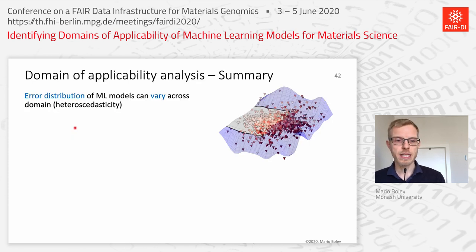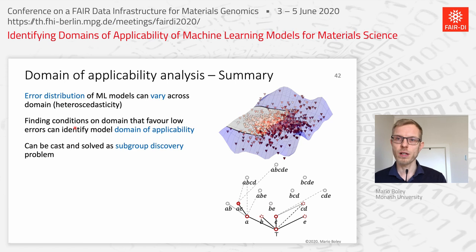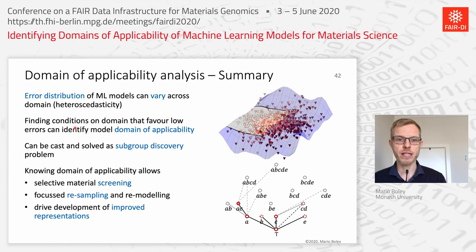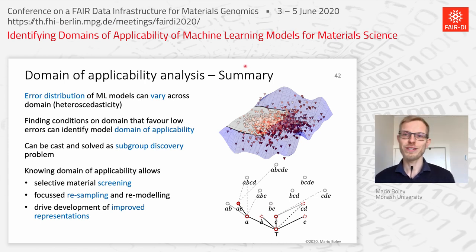In summary: the error distribution of machine learning models can vary across the modeled domain — a phenomenon called heteroscedasticity. We can identify systematic causes of error based on representations and other choices, formulating conditions on the domain that define the domain of applicability. This can be cast as a subgroup discovery problem and solved efficiently in practice. Once we have the DA, we can use it for selective application and screening, focused resampling to remodel parts outside the DA, and targeted systematic improvement of design choices. Thank you for your attention.